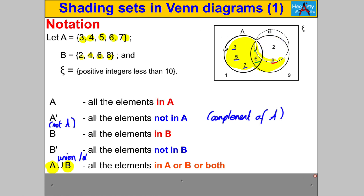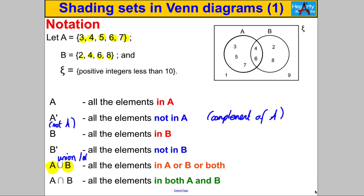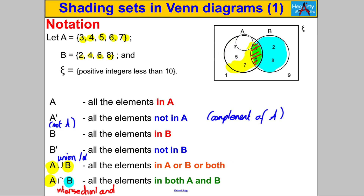The last symbol is intersection, which means 'and.' You'll hear it said as 'A and B' or 'A intersection B.' It means all the elements that are in A and B at the same time. When I see intersection, I color A in one color — say yellow — and then color set B in a different color — say blue. The intersection is where the colors have merged, in the overlap. So A intersection B — the elements in both A and B simultaneously — are 4 and 6.